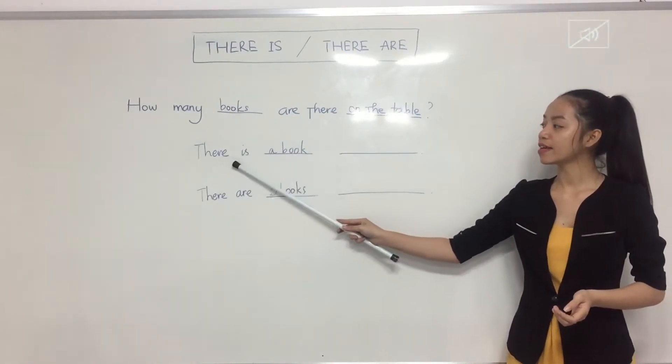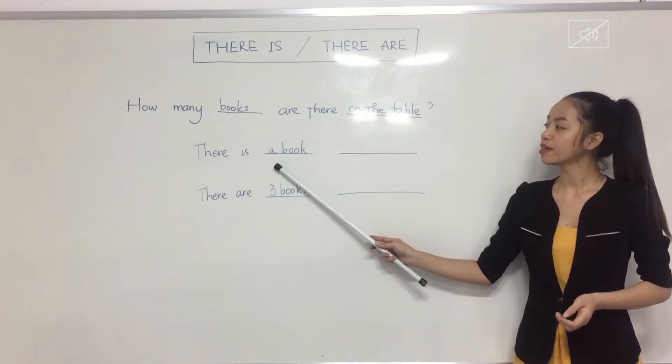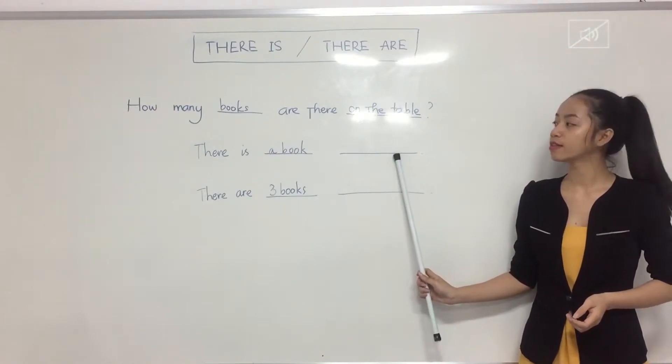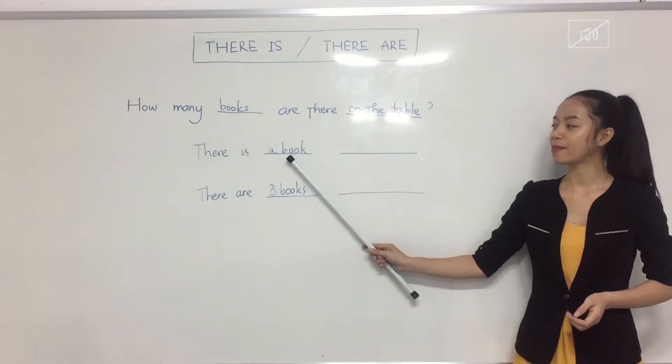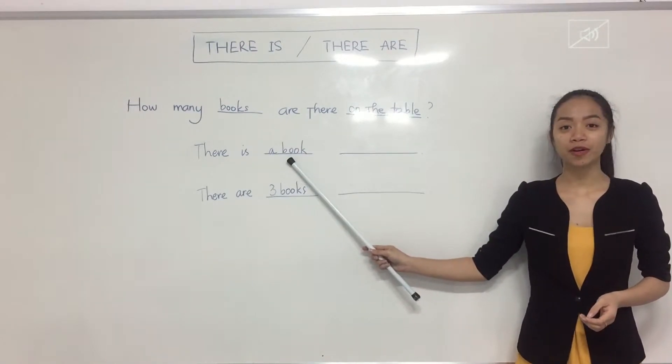Okay. Repeat after me. There is a book. There is a book on the table. Again. A chair. A pencil. A pen. A rubber.